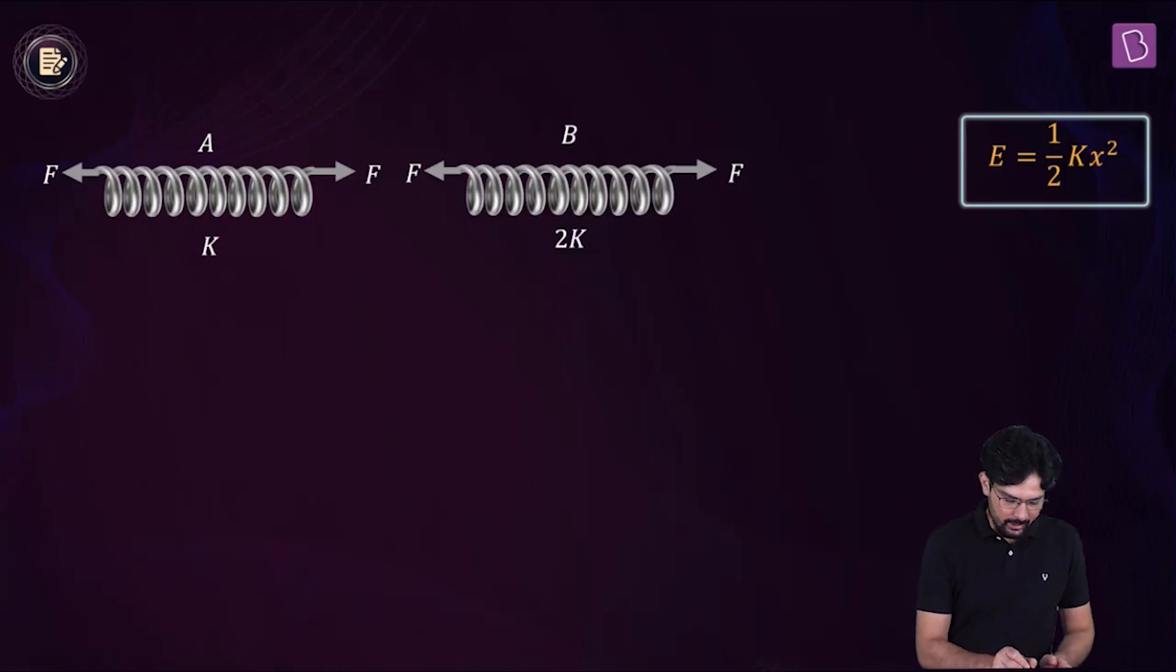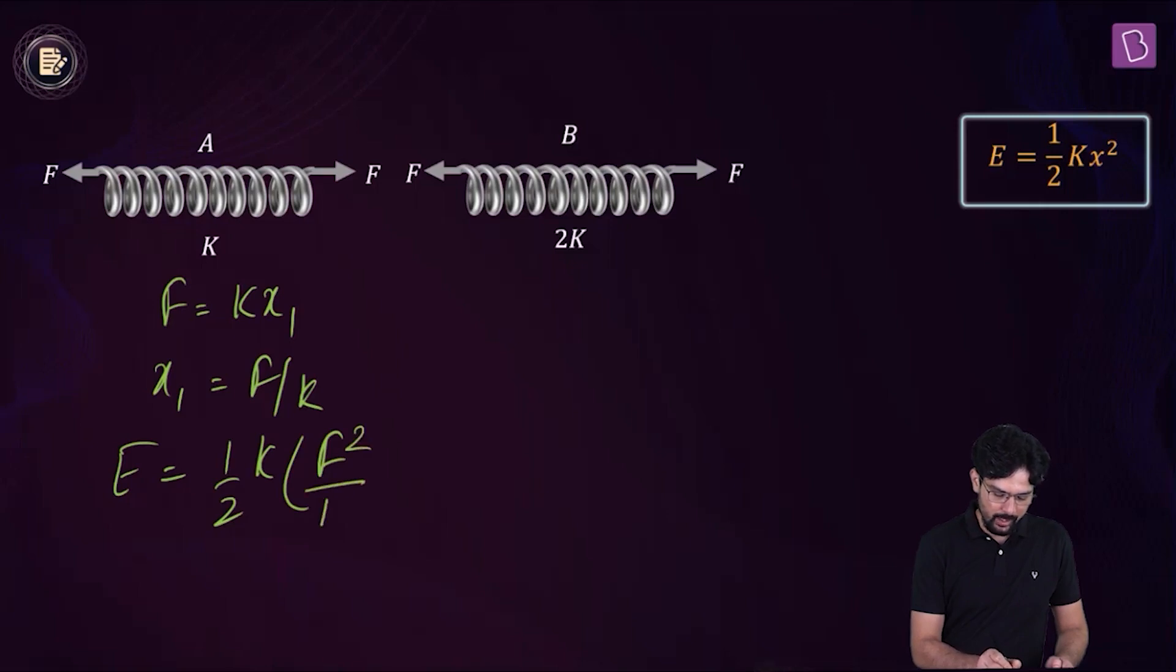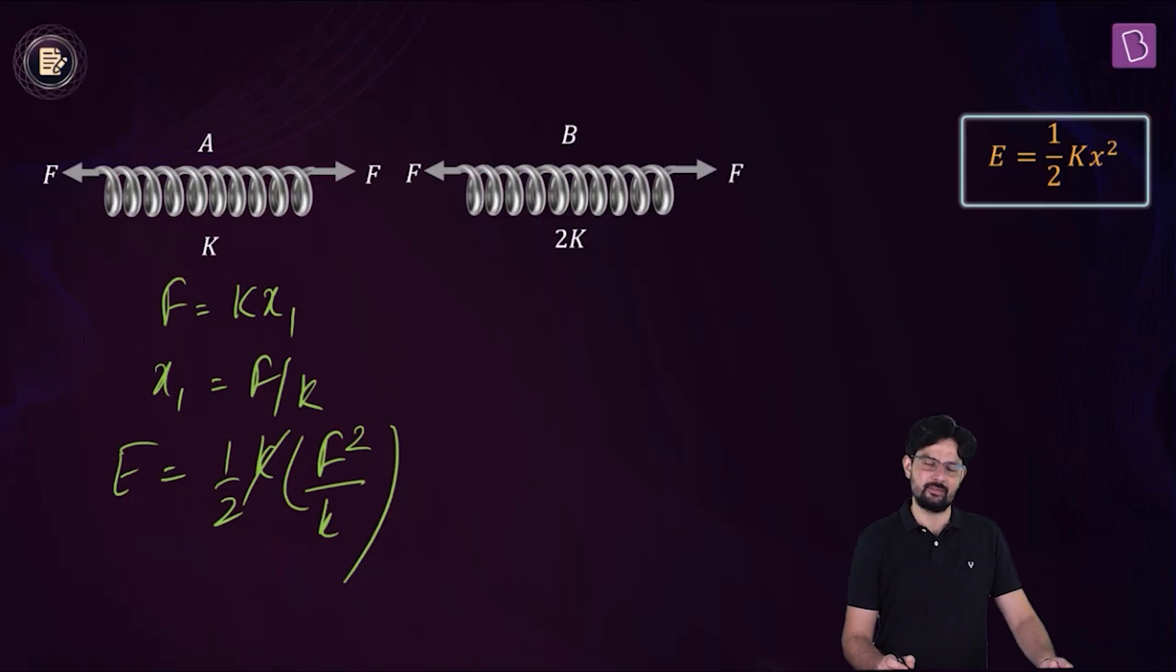So first, let's find out what is the extension in spring A. So we have, in this case, F will be equal to K into X1. And X1 comes out to be F by K. So that the value of E, which is the energy stored in this spring is half K X1 square. That is F square by 2K.